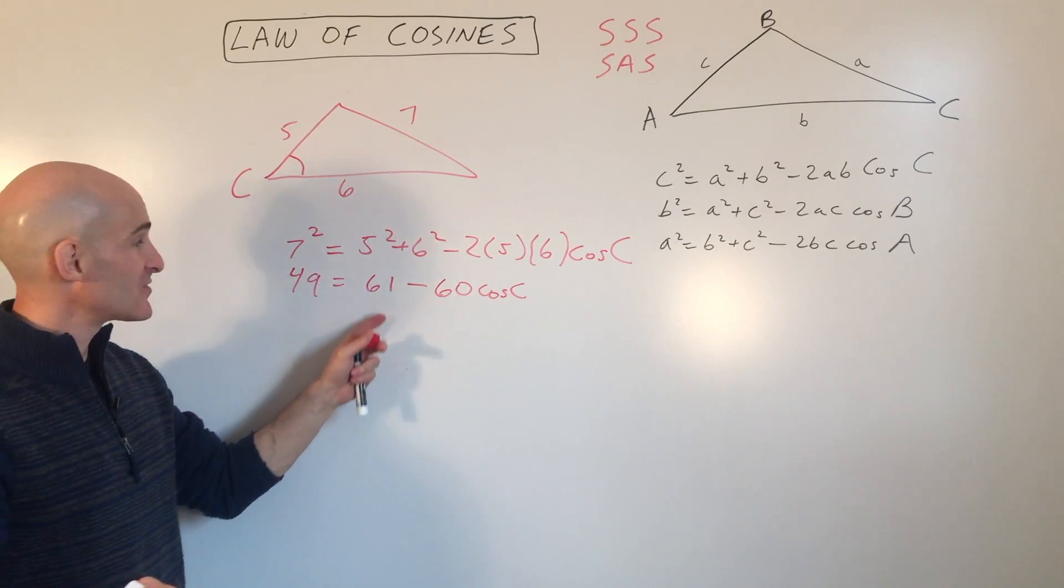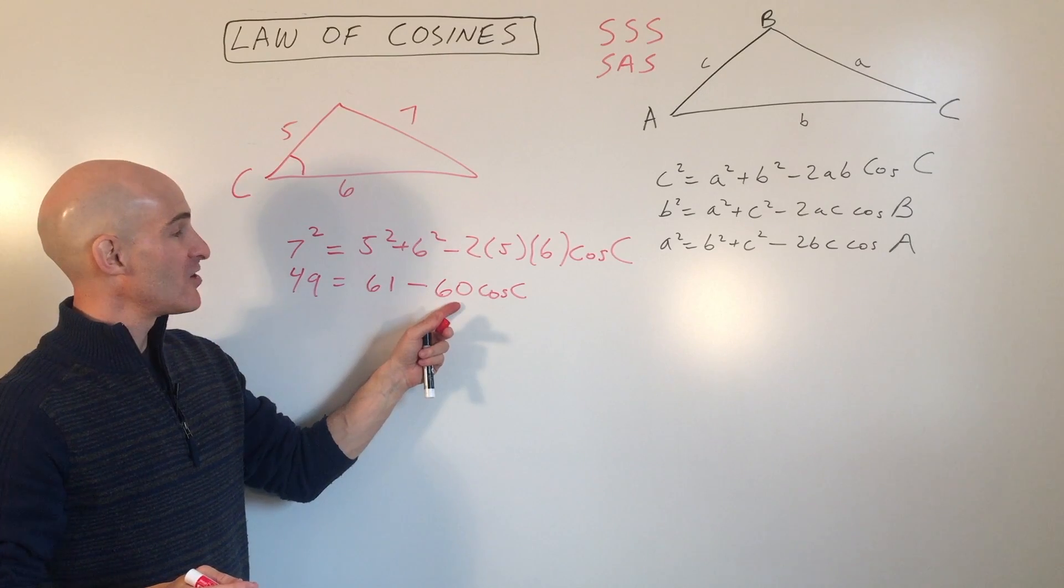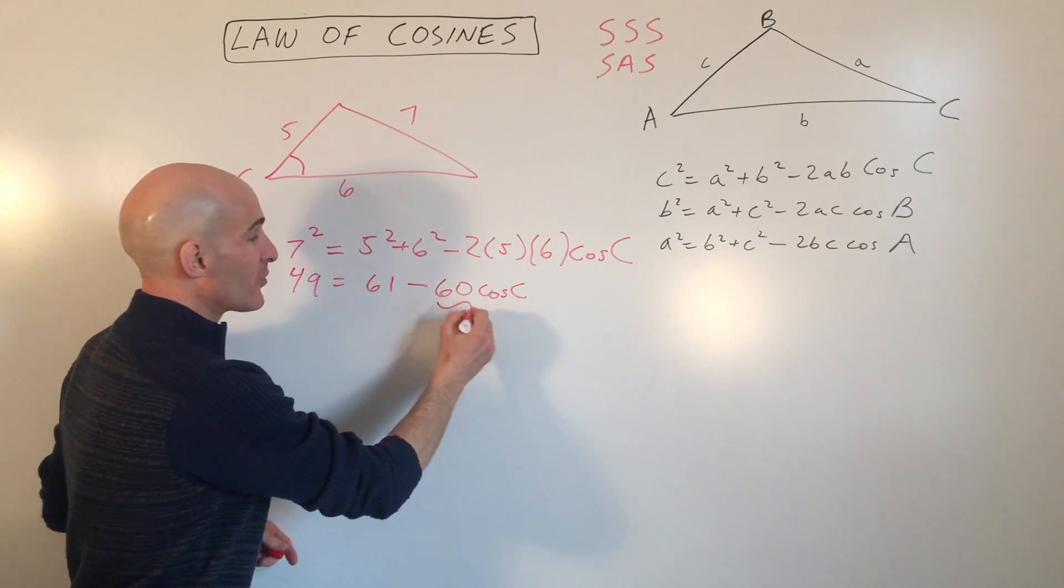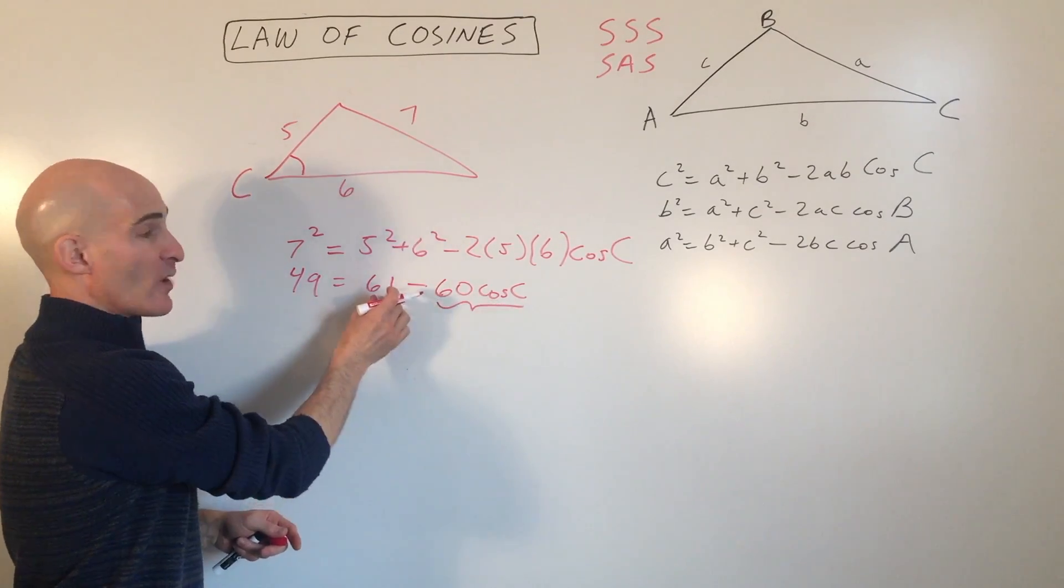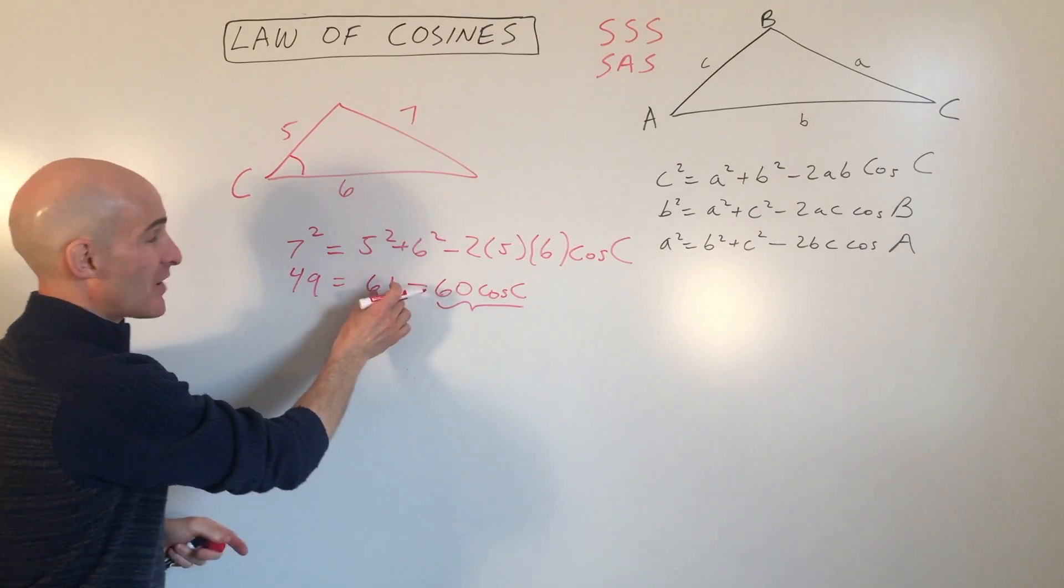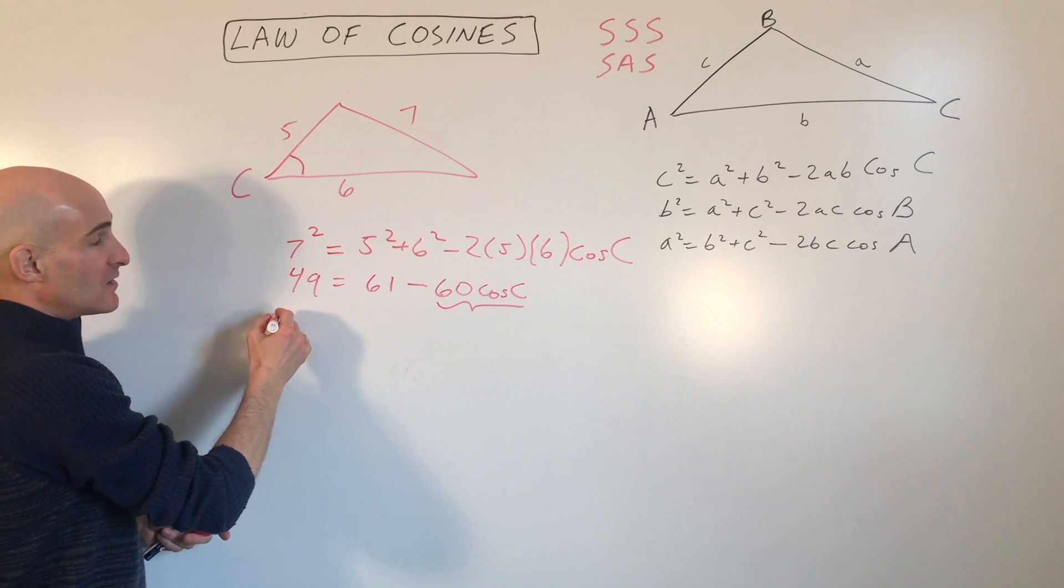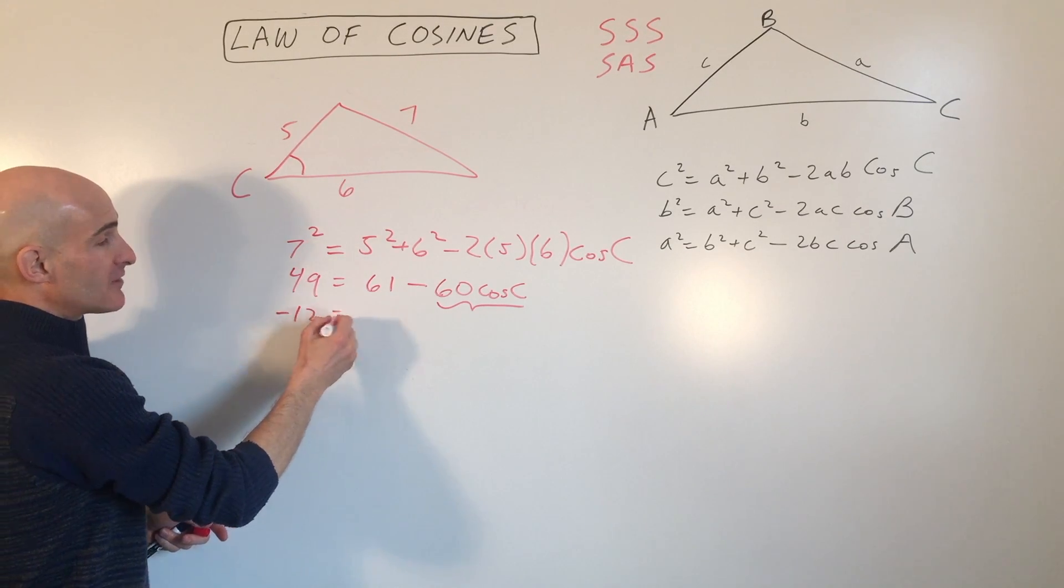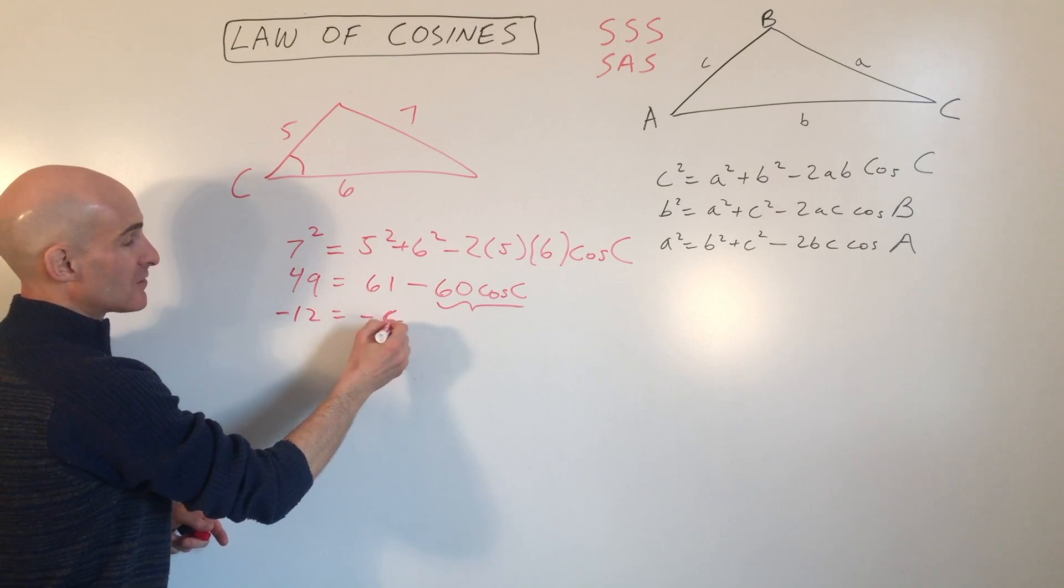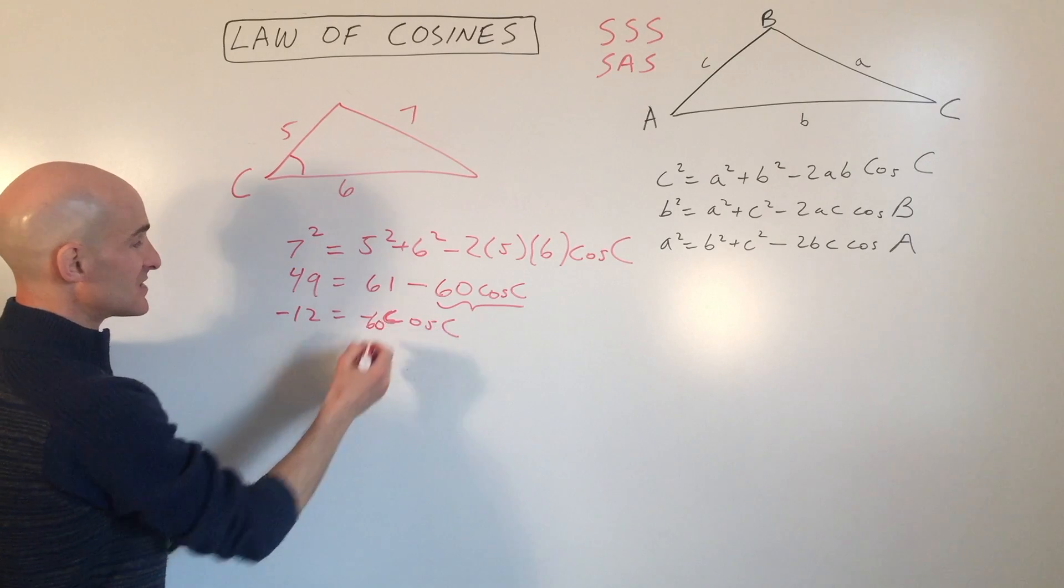Now here's where some students make a mistake. They'll combine these and they'll say, oh, that's 1. But you see, this is a group. These are all multiplied together. What you want to do is you want to work from the outside in towards this cosine to get it by itself. So I would subtract 61 from both sides. So that would give you negative 12 equals negative 60 cosine C.